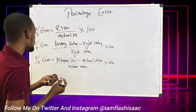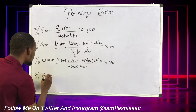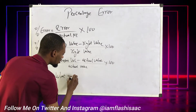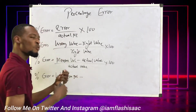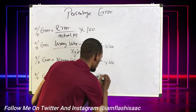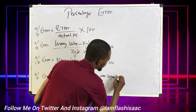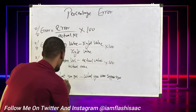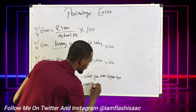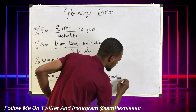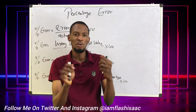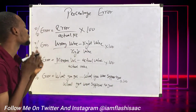Or better stated: percentage error equals what you got minus what you were supposed to get, over what you were supposed to get, times 100. In all these formulas, percentage error is your error over the actual value or the real value, times 100.